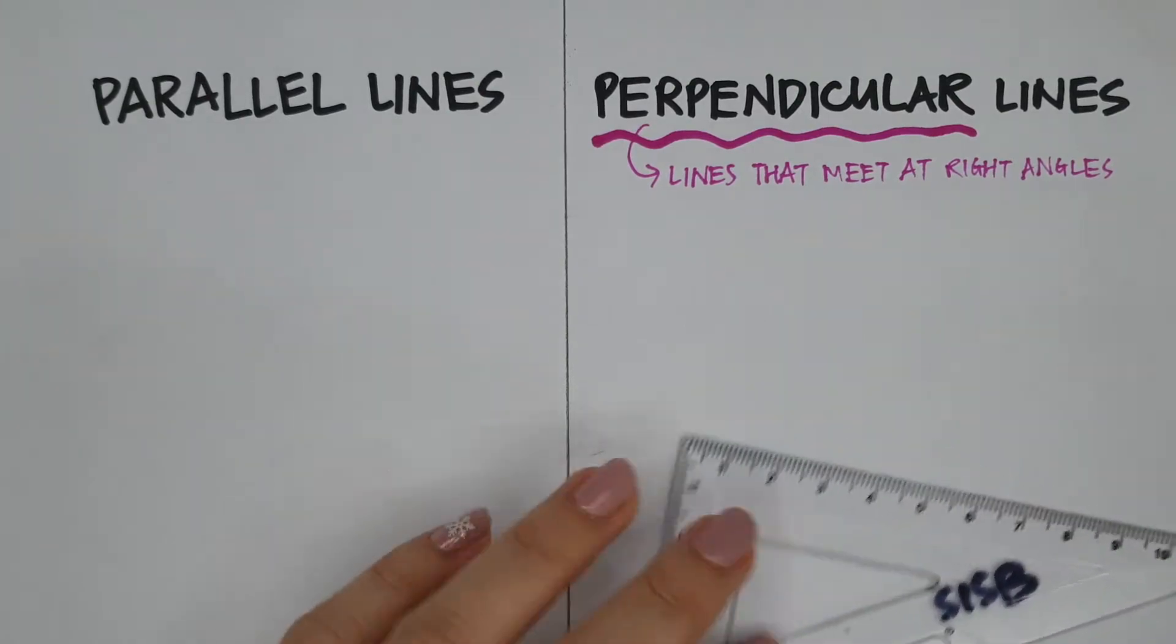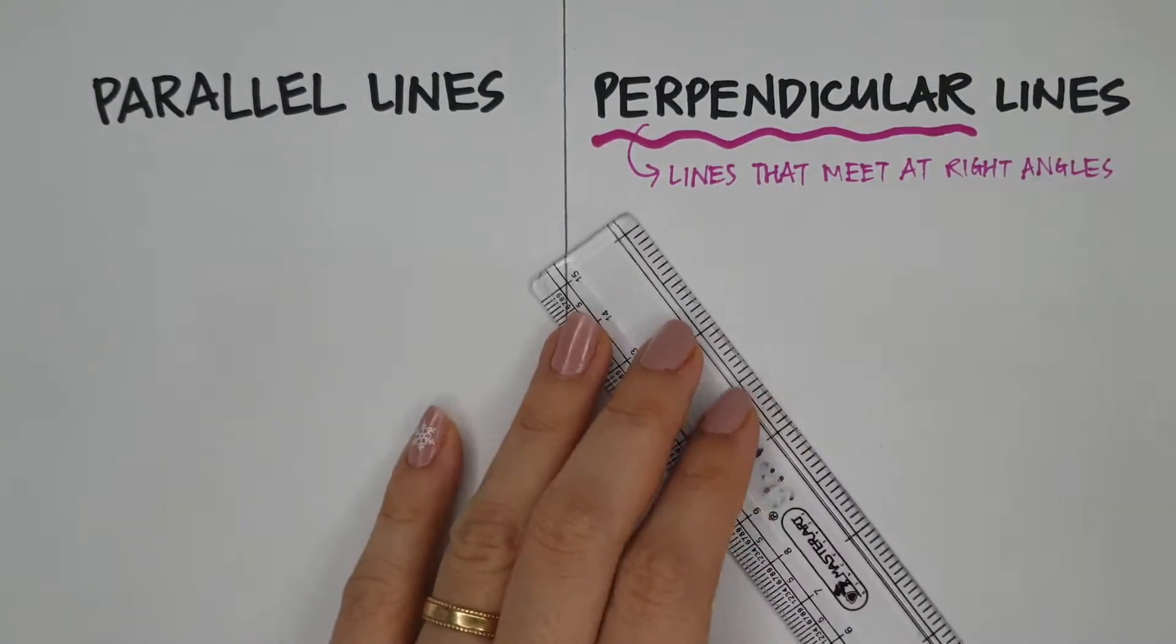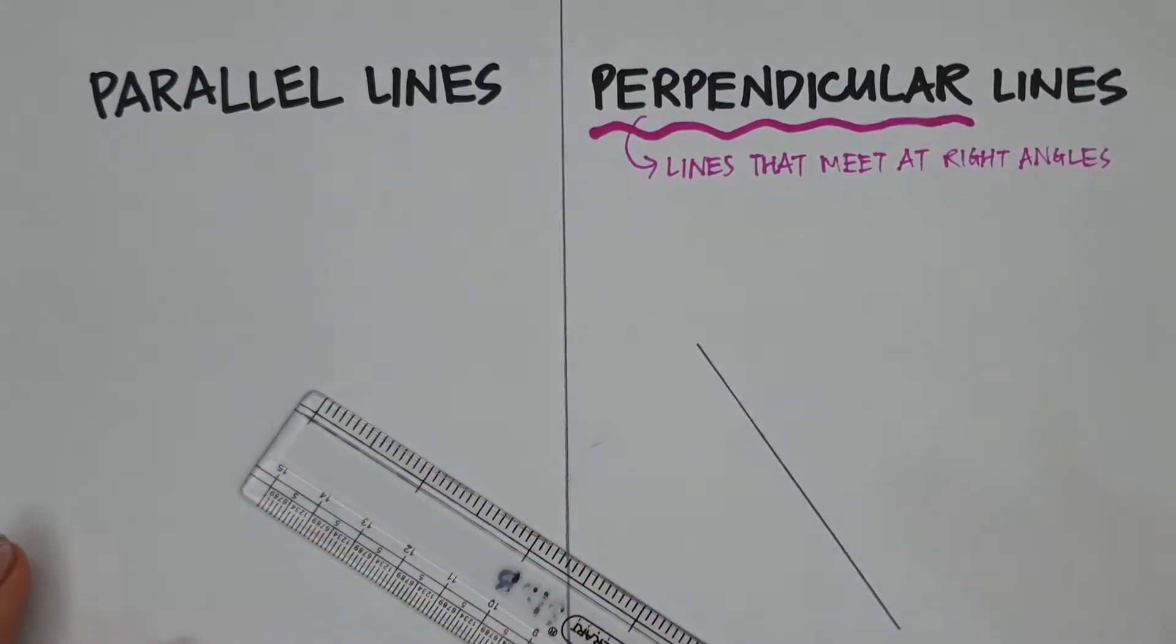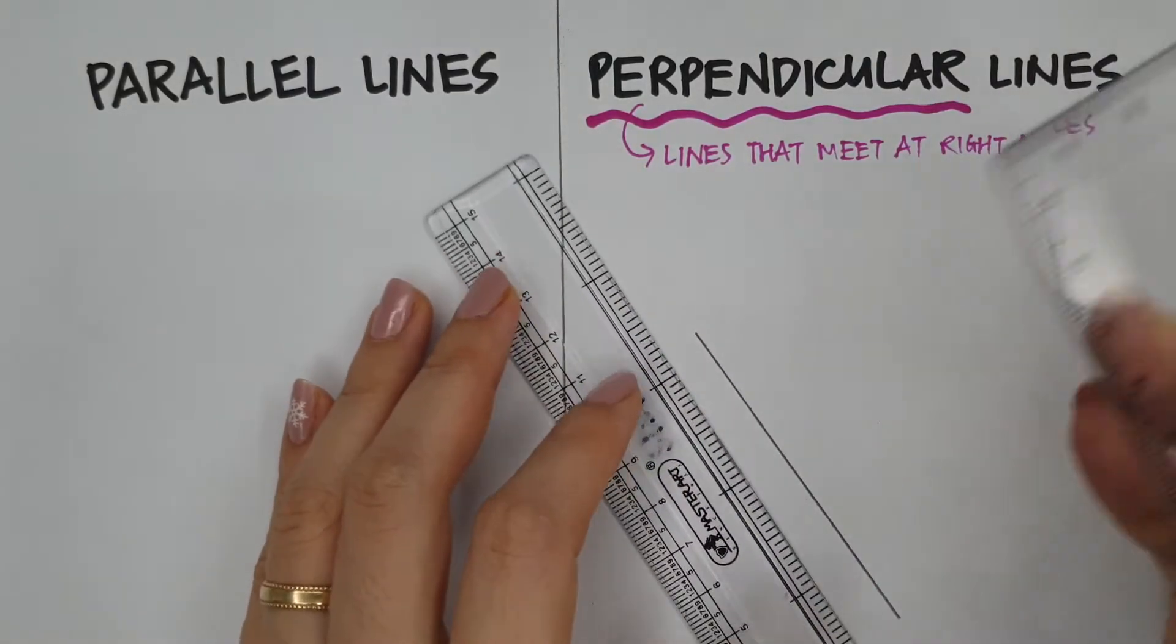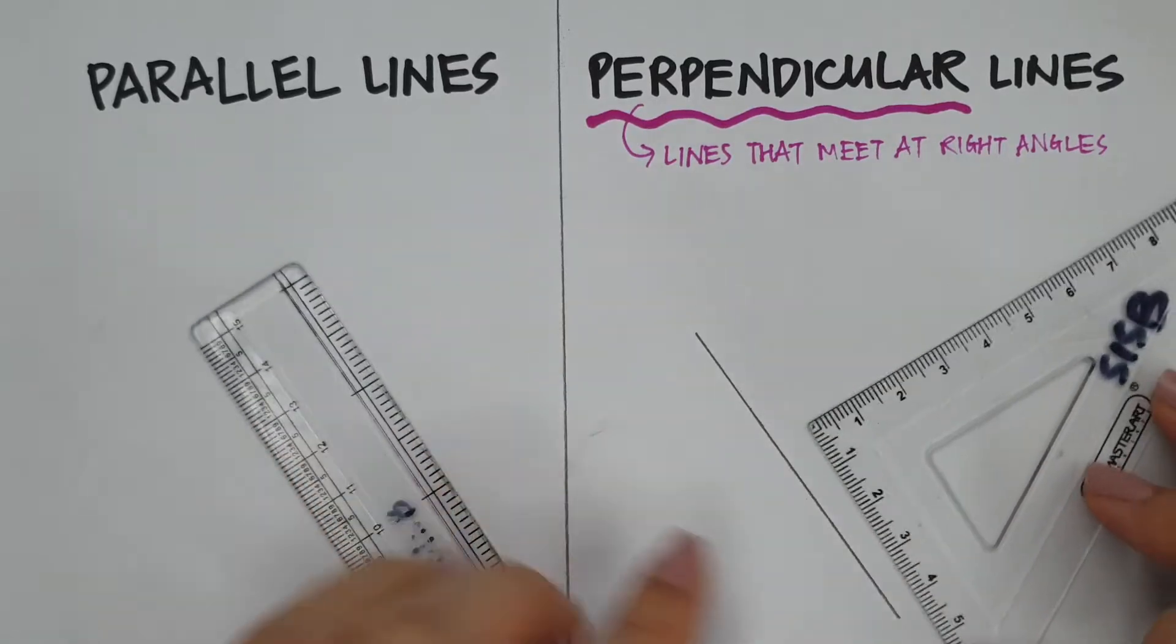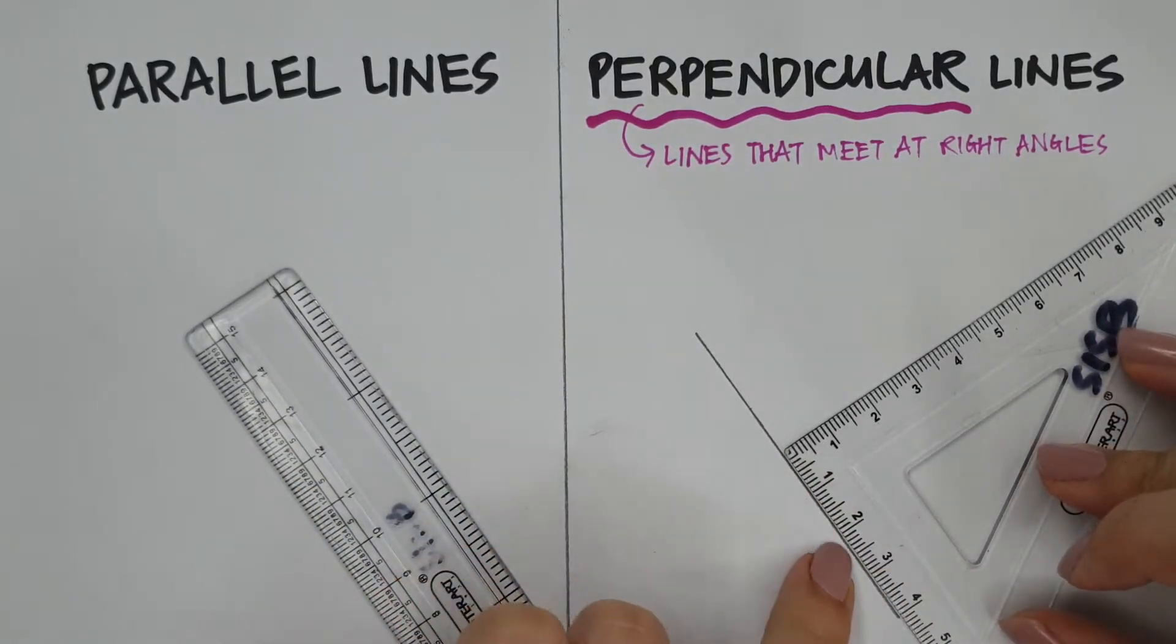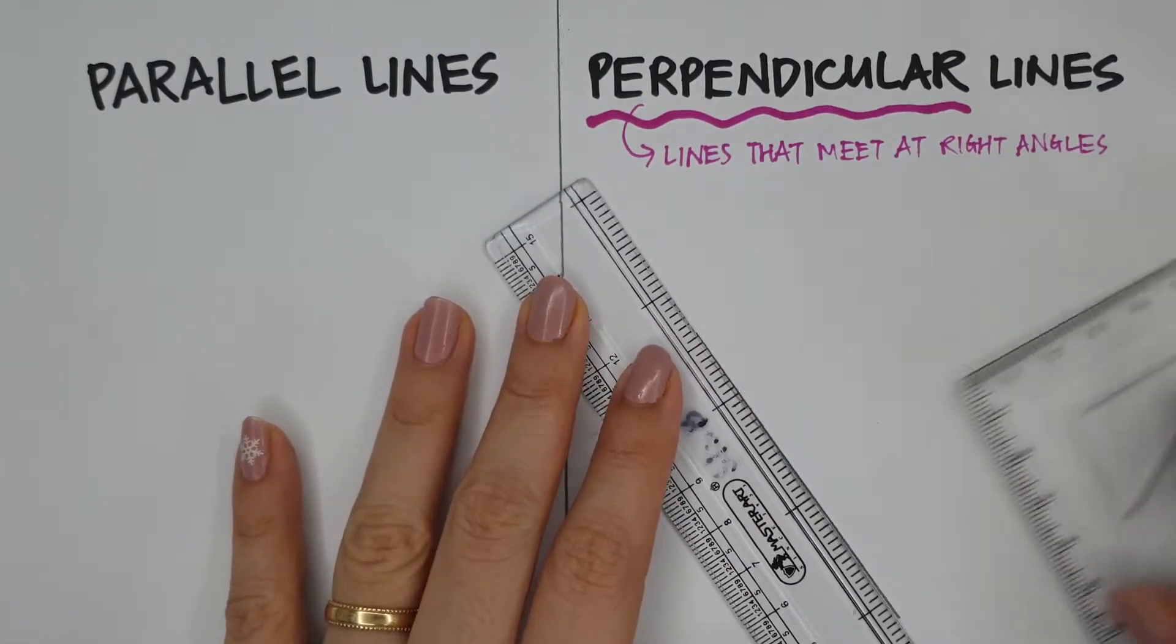So, to draw perpendicular lines, the first thing is we need to draw one of the lines. If you have a line and you want to draw a perpendicular line to this, you just need to put your set square, the corner that has a right angle on the line, and make sure it's exactly on the line. If you cannot make sure it's on the line, first you put the ruler there, then you put it on.